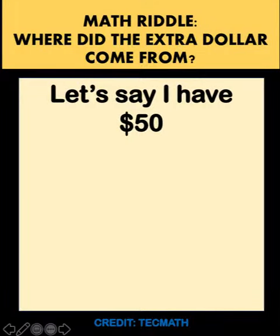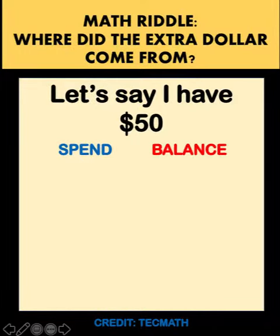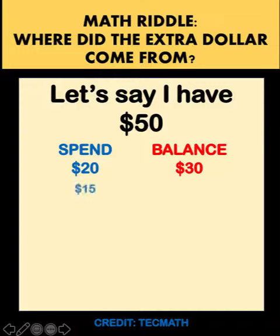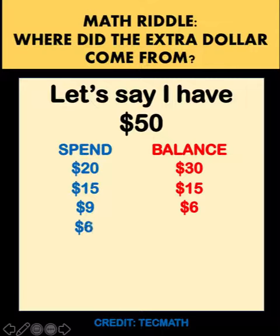Let's say I have $50 and I recorded the amount I spent and my balance. I spent $20, so my balance would be 50 minus 20 equals $30. Then from the $30, I spent $15, so my balance would be $15. Then I spent $9, and my balance would be 15 minus 9 equals $6. And finally, I spent the remaining $6, so my balance would be $0.